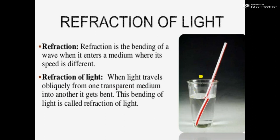Let us consider air and water as a pair of transparent media. From air to water, light is traveling obliquely. Then what will happen to the light according to refraction? It gets bent. This phenomenon of bending of light is called refraction of light. For example, the straw appears bent inside the water because of refraction of light.